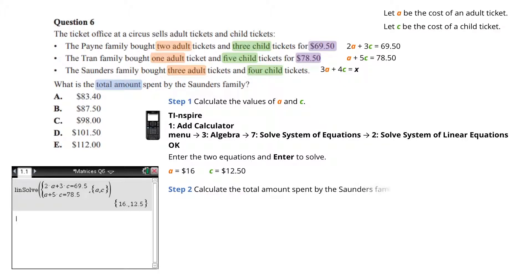Step 2. Calculate the total amount spent by the Saunders family. That is, 3A plus 4C. 3 times 16 plus 4 times 12.50. Which gives us a total of $98.00. So, the answer we are after is option C.